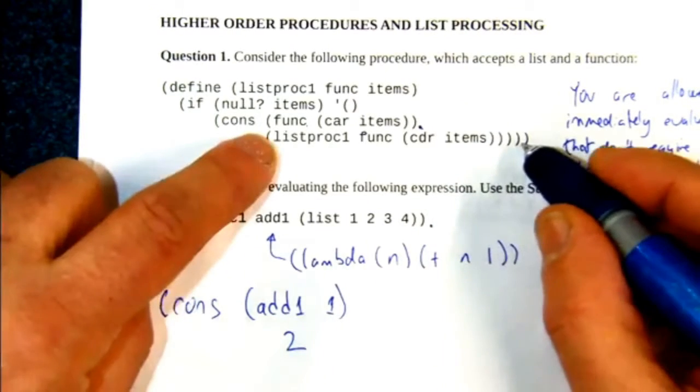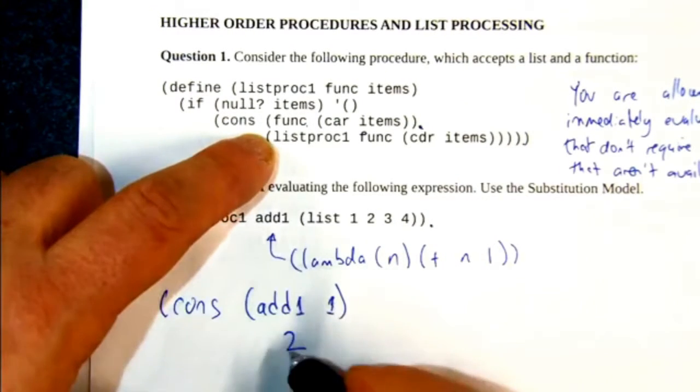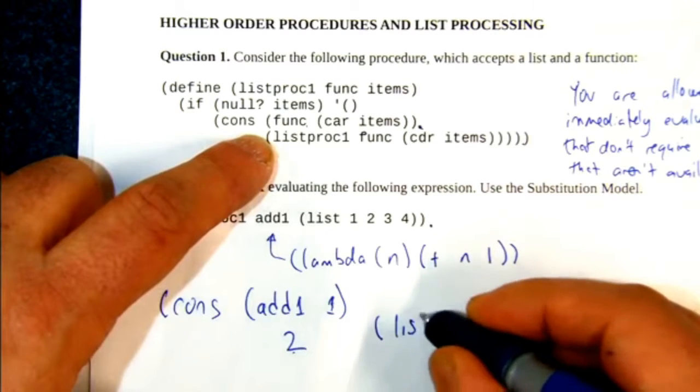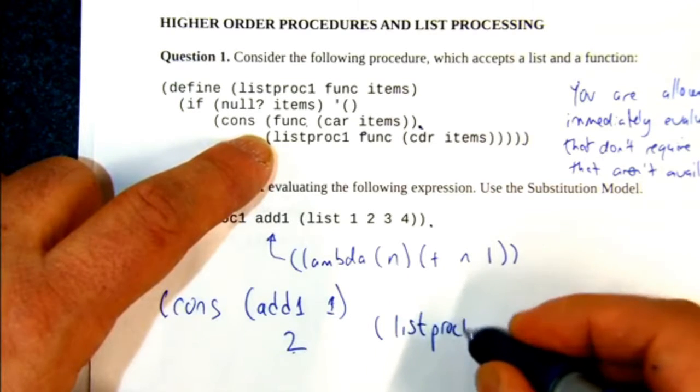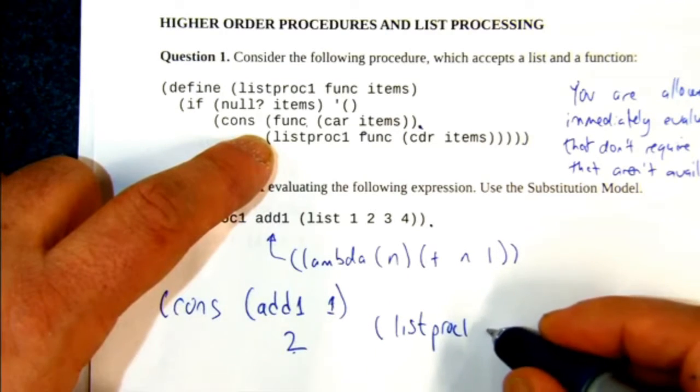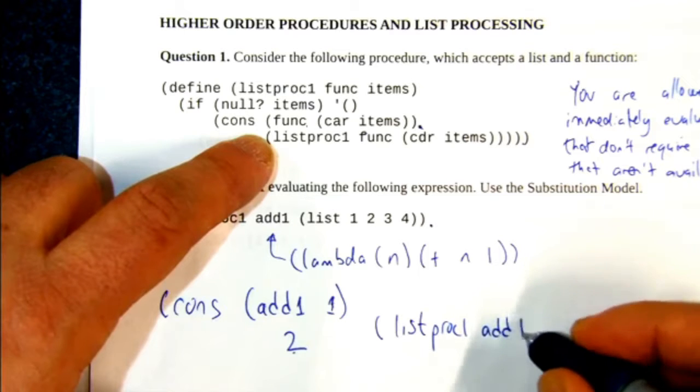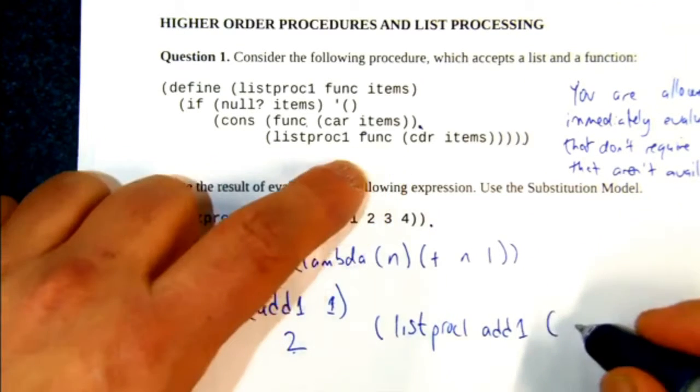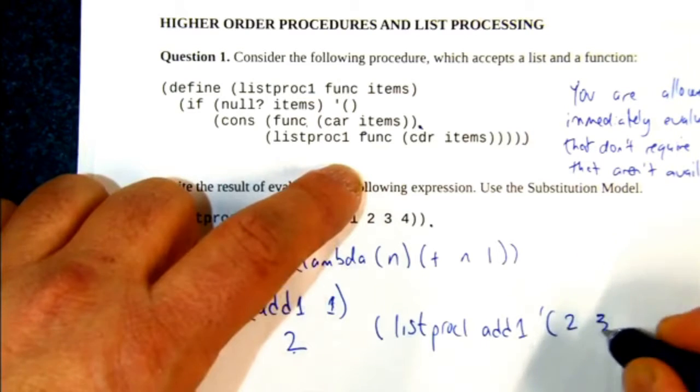And then we've got the recursive call. So we're consing 2 to we're going to call ourselves listproc1. We'll carry add1 through to the next call. And then cdr of items is the list 2, 3, 4.